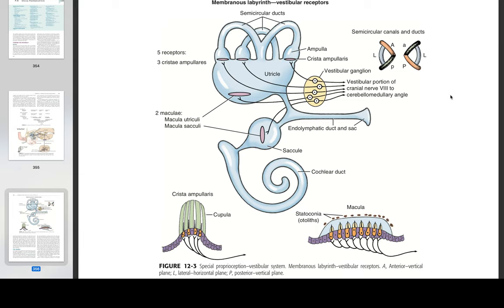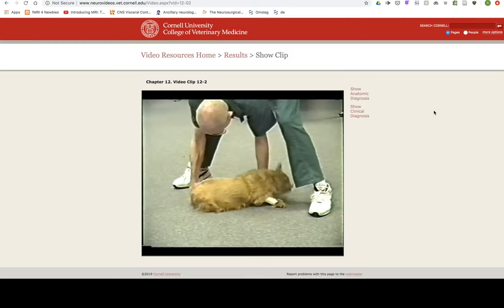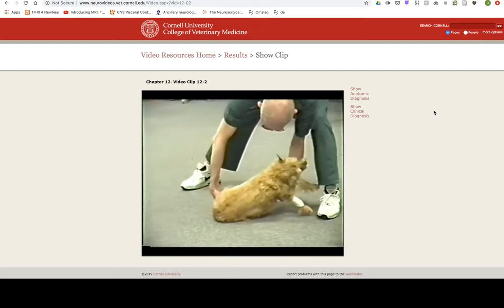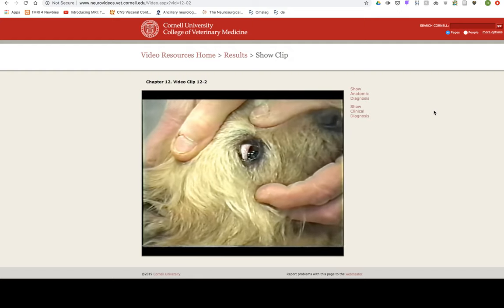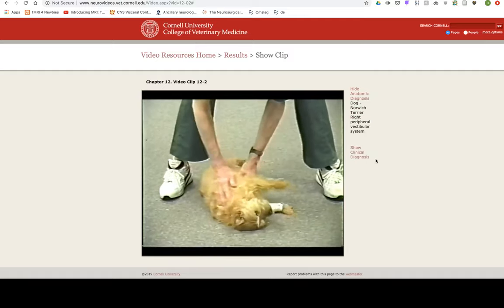At one end of each membranous semicircular duct is a dilation called the ampulla. On one side of the membranous ampulla, a proliferation of connective tissue forms a transverse ridge called the crista, lined on its internal surface by columnar neuroepithelial cells. On the surface of the crista is a gelatinous structure composed of a protein-polysaccharide material called the cupula, which extends across the lumen of the ampulla. This neuroepithelium is composed of two basic cell types: hair cells and supporting cells. The neurons of the vestibulocochlear nerve are derived from otic placode ectoderm. The dendritic zones of the vestibular neurons are in synaptic contact with the base of the hair cells, which have on their luminal surface stereocilia (modified microvilli) and a single kinocilium. Movement of fluid in the semicircular duct causes deflection of the cupula, bending the stereocilia, which generates a stimulus via the hair cells to the vestibular neurons.